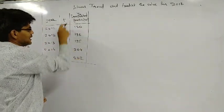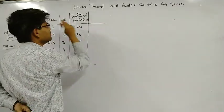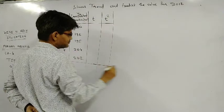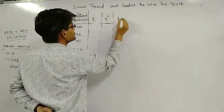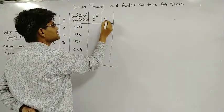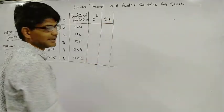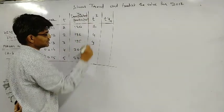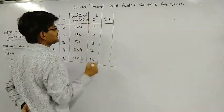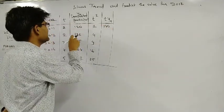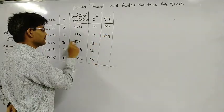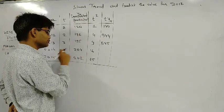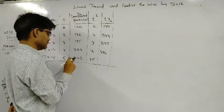Here we will use small numbers. Once we have started, we will assign T values: T=1, T=2, and so on. The T-squared values are 1, 4, 9, 15, 25. The Y values are: 180 into 1 = 180, 192 into 2 = 384, 195 into 3, 204 into 4, 202 into 5.